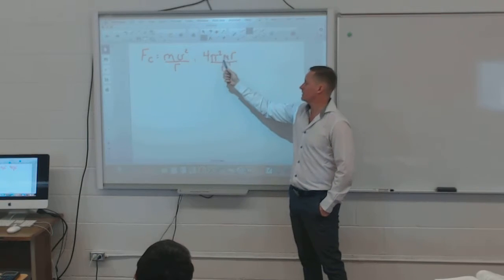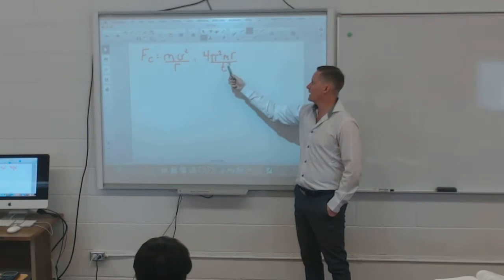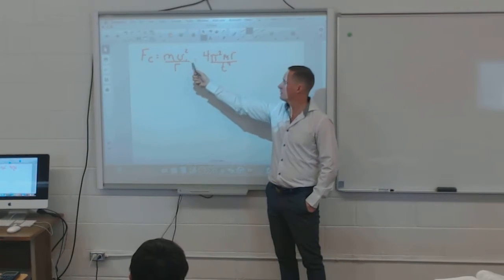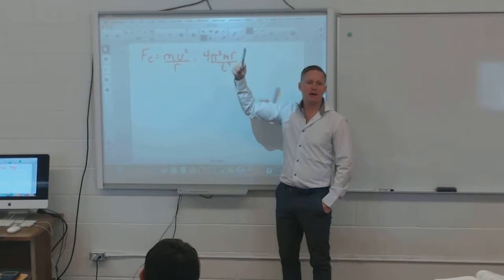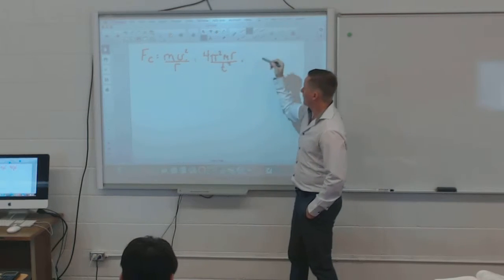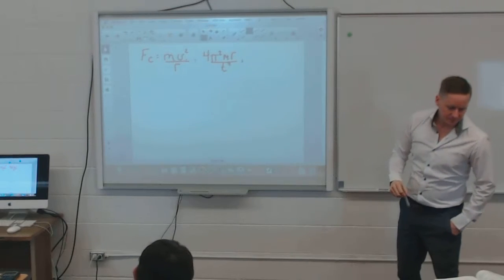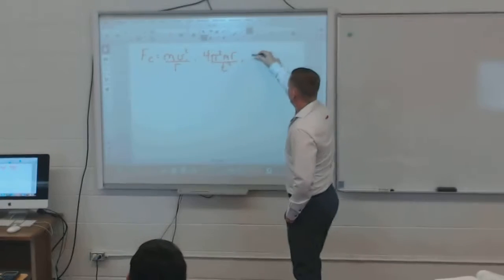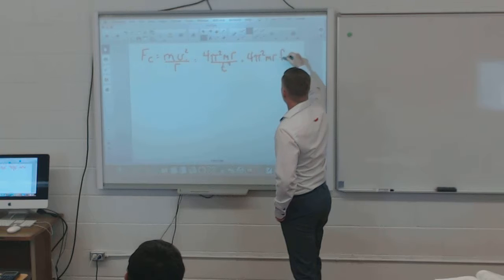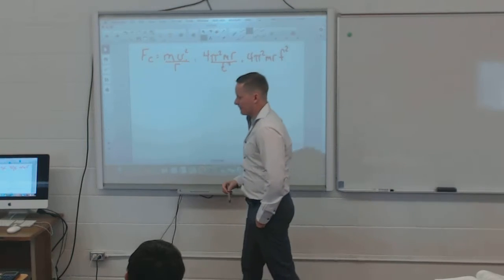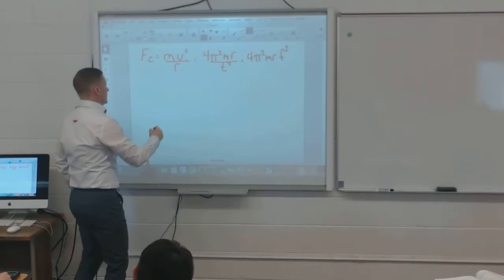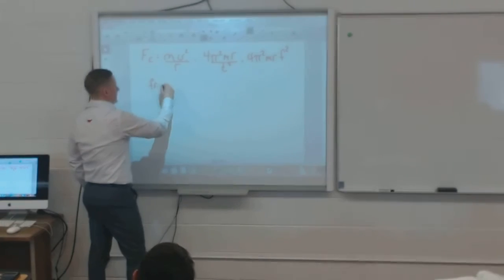You will always be given mass and radius in all of these equations. In the first equation, you're given the velocity moving around the circle. In the second, you're given the time it takes to get around the circle. The third equation uses frequency squared. We haven't talked about what frequency is, so we're going to do that now.